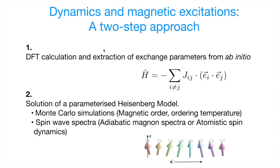So in practice, we can access finite temperature and excited state properties of magnets by using the so-called two-step approach. In the first step, we perform the DFT calculation and extract the JIJ parameters from first principles. And then, once we have a parametrized Heisenberg model, we can solve it, either treating spins as classical vectors, or to treat them as quantum operators. But the good thing is that we can solve such kind of models by using Monte Carlo calculations, and this gives access to the ground state magnetic order and also the ordering temperature.